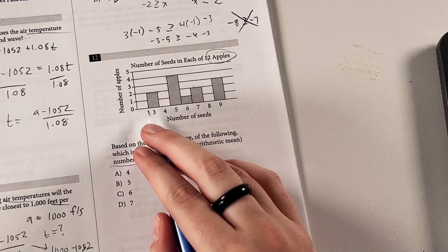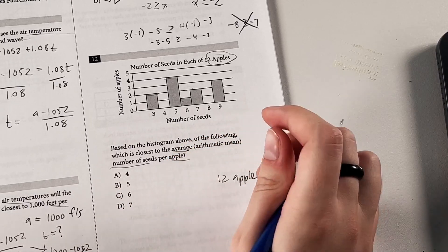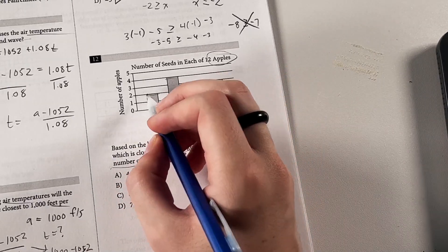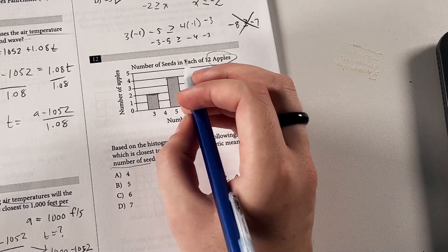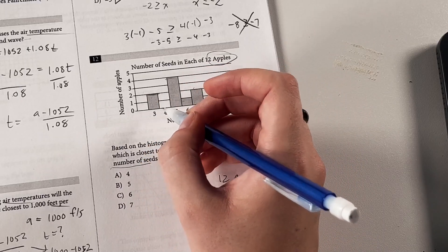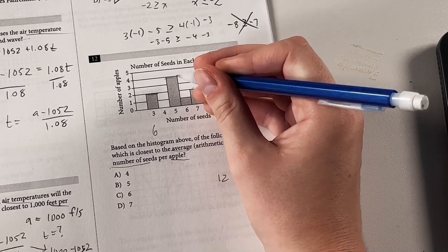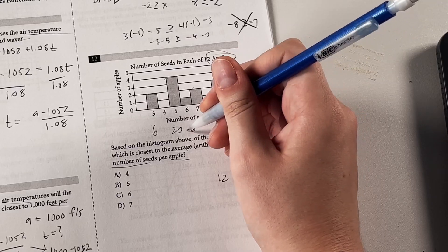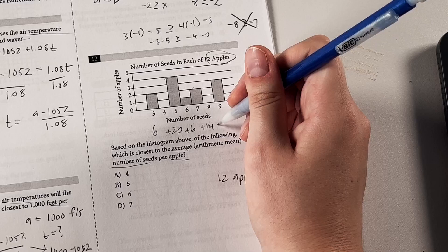And then we know the total number of seeds for each of the apples. Keep in mind, we're trying to find the total number of seeds among all of these apples. We need to multiply the number of apples by the amount of seeds each one has. So if we have two apples with three seeds each, that's going to be a total of six seeds for this little bar. Following that pattern, 5 times 4 is 20, 6 times 1 is 6, 7 times 2 is 14, and 9 times 3 is 27.